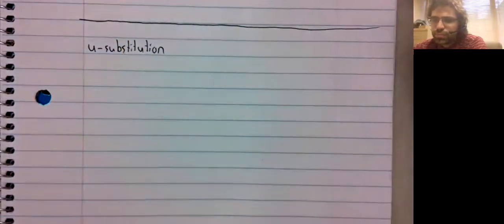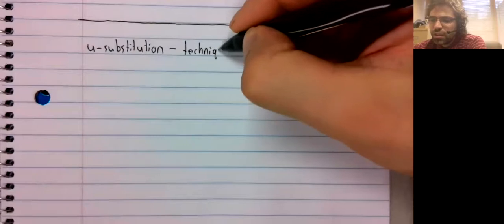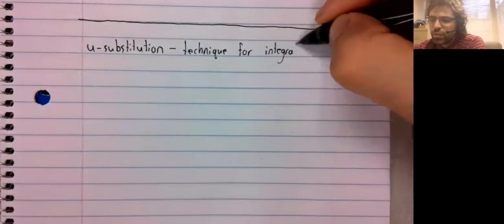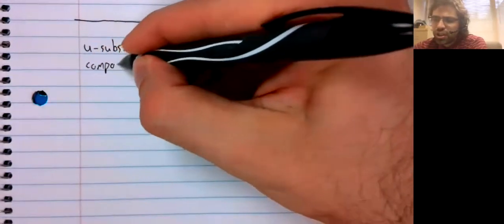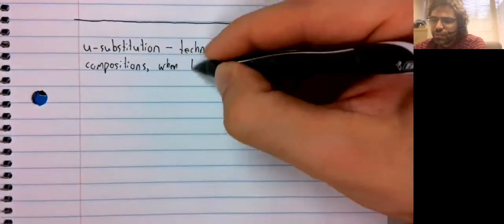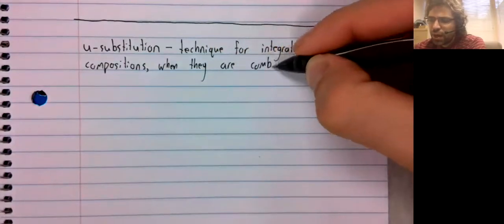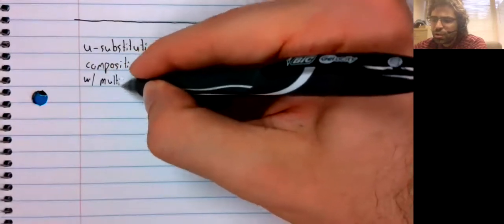u-substitution is a technique for integrating compositions when they are combined with multiplication.